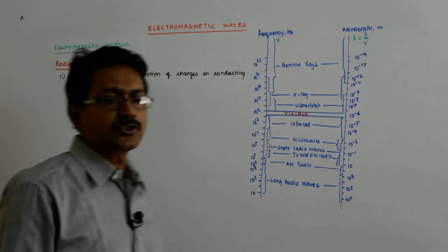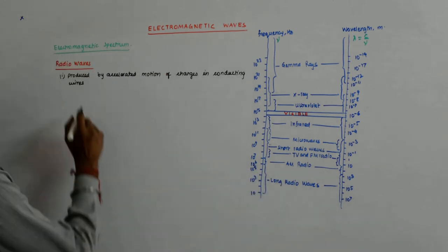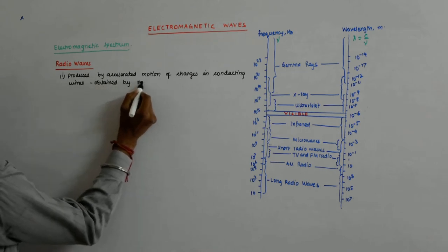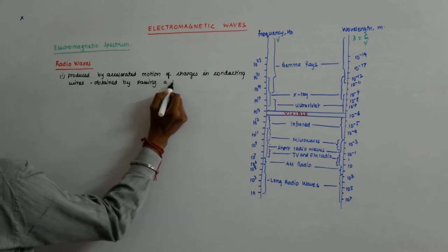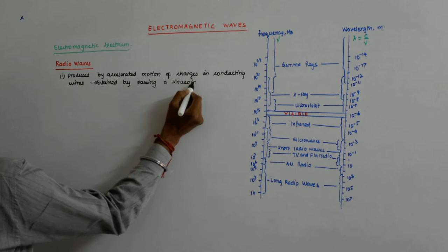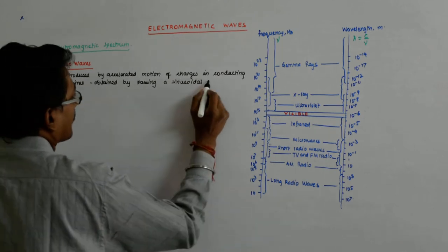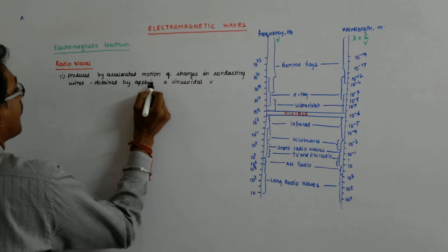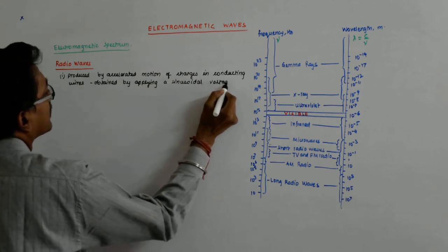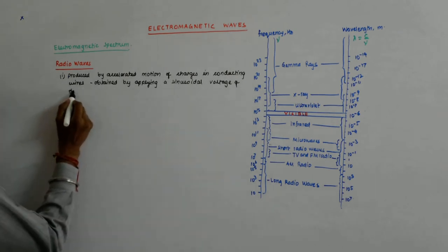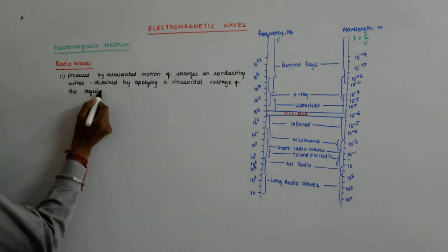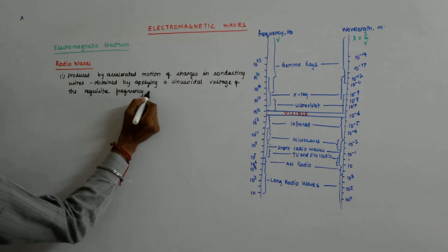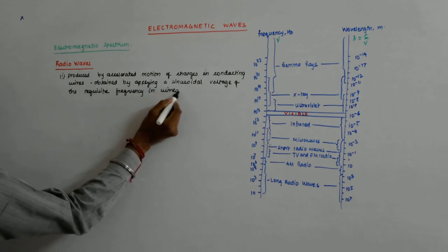And how is that produced? That is obtained by applying a sinusoidal voltage of the requisite frequency in wires.